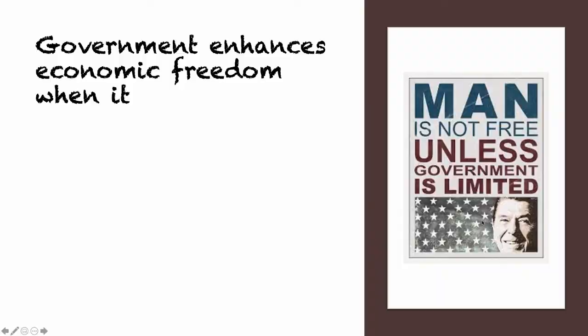Let's examine a couple of the things that governments can do to promote economic freedom. Government has the power to enhance economic freedom. Some of these points come from Adam Smith and what he viewed as the role for government. Smith says — and most economists agree — that governments can do a pretty good job providing infrastructure: putting in roads, building bridges, hiring the right people to do the work. If governments do a good job at that, they can promote voluntary exchange in a significant and meaningful way.